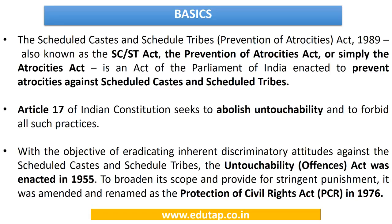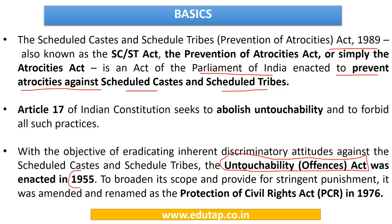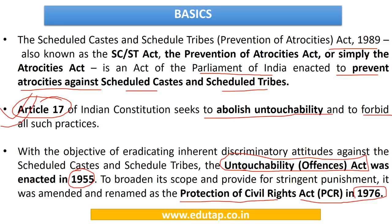The Scheduled Caste and Tribe Prevention of Atrocities Act 1989 is an act of the Parliament of India enacted to prevent atrocities against Scheduled Castes and Scheduled Tribes. The Untouchability Offences Act was the first such act, enacted in 1955, which was amended and renamed as the Protection of Civil Rights Act in 1976. Apart from all such acts, Article 17 of the Indian Constitution also seeks to abolish untouchability and to forbid all such practices.